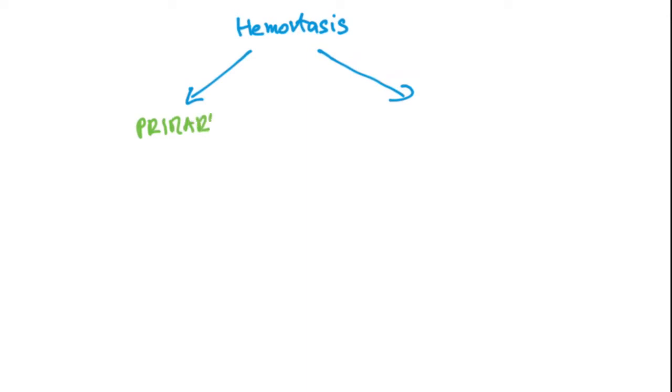Let's divide hemostasis into primary and secondary. What does this mean? Under primary, you should think of issues with thrombocytes or the vessel wall. Under secondary, there's something with the coagulation cascade.